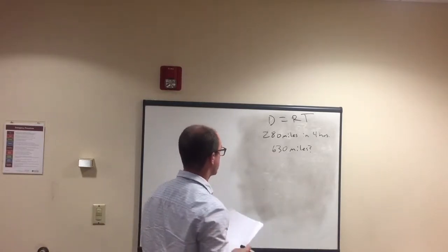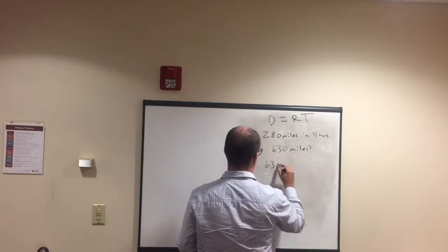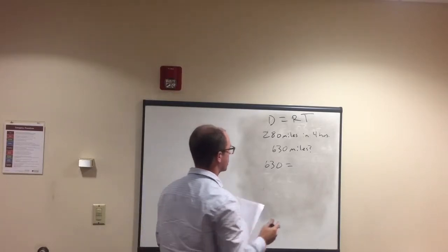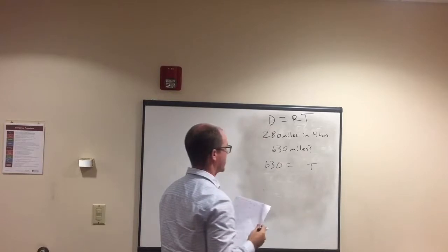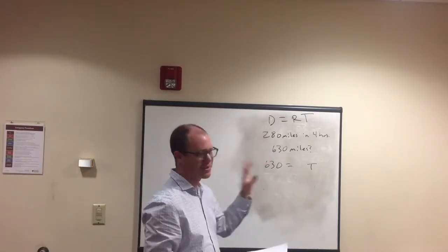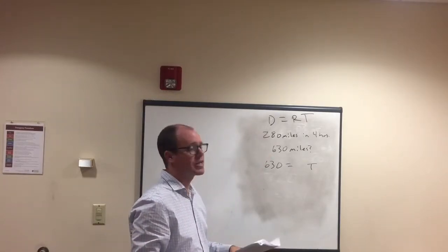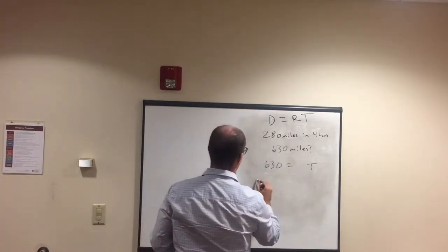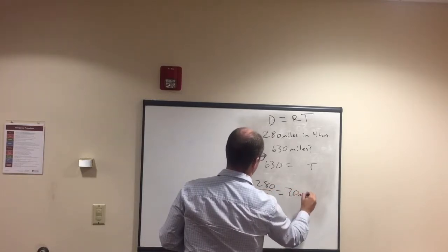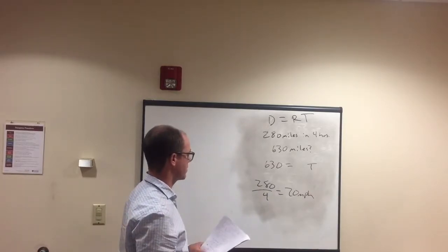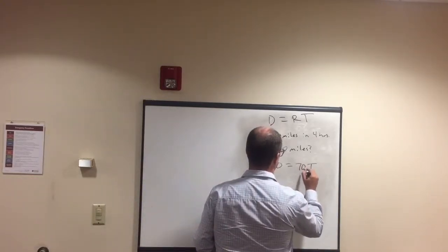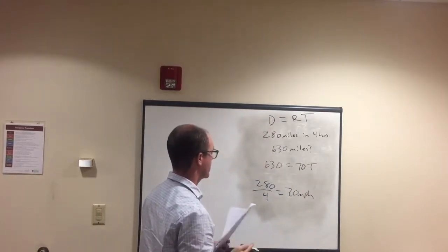They're giving us the distance of 630 miles and asking how long it takes — so we don't know time. We do have enough information to find the rate: 280 miles in four hours means 280 divided by 4 equals a rate of 70 miles per hour. So now we set up 630 equals 70 times t.